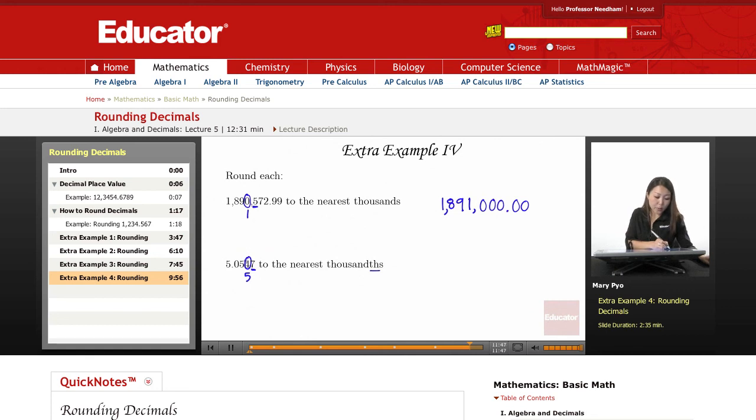So again, the circled number, it's either going to stay the same if this number behind it is smaller than 5, or it's going to become one bigger if it's 5 or greater, if the number behind it is 5 or greater.